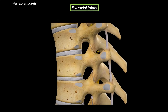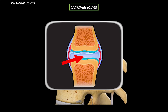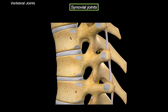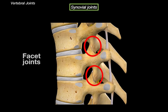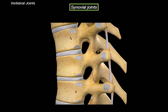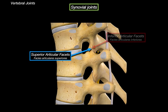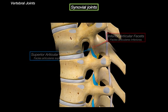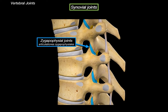Next, the synovial joints. Synovial joints are characterized by a joint cavity filled with synovial fluid, surrounded by a capsule and lined by synovial membrane, allowing a wide range of motion. In the spine, the first example is the facet joints — formed between the superior articular facet of one vertebra and the inferior articular facet of the vertebra above. These are plane-type synovial joints allowing gliding movement. Degeneration of these joints is common with aging and can lead to facet joint arthropathy, causing localized pain and referred pain patterns that can mimic nerve root compression.